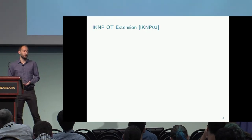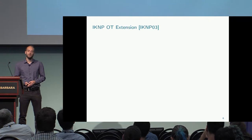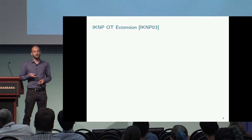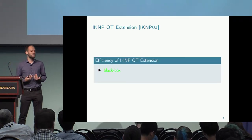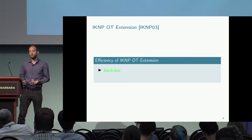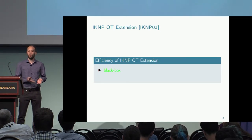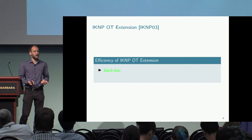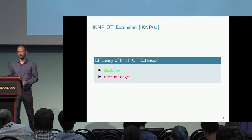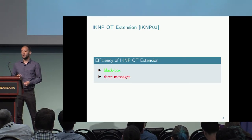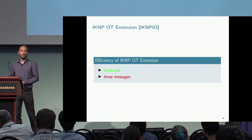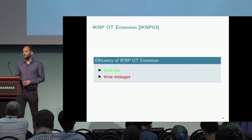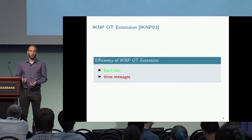There is an alternative construction called the IKNP construction, named after its authors Ishai, Kilian, Nissim, and Petrank. Its great merit is that it is blackbox, making it very efficient — which is why it is the one used to realize multi-party computation in practice. However, its drawback is that it requires three messages when starting with a two-message oblivious transfer, which is something we would not like to have.